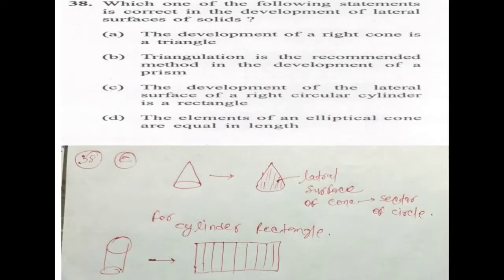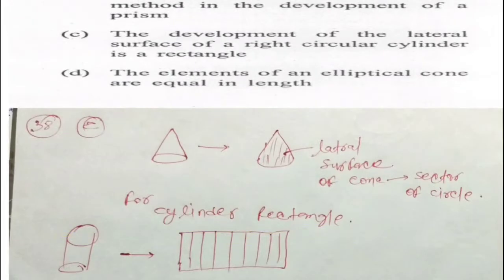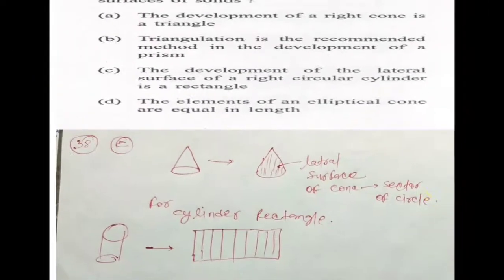See in the module I gave: the development of the lateral surface of a right circular cylinder is a rectangle — this is correct, because for any cylinder we need a rectangle and by the parallel line method we construct cylinders. Option D is also wrong — elements of an elliptical cone are not equal in length, and elliptical cones are not important for us.